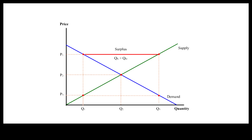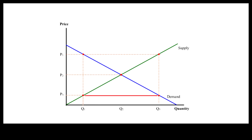This surplus would disappear as price is lowered until the quantity supplied is just equal to the quantity demanded. If the price is set too low, the quantity demanded will exceed the quantity supplied. The resulting gap is called shortage or excess demand.